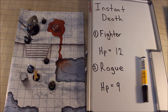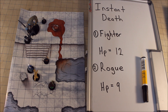In the game of Dungeons & Dragons you have hit points, and when you are reduced to zero hit points there are a few possible outcomes. One, you are going to fall unconscious and you're in the process of dying, or you simply die outright — you are instantly killed.